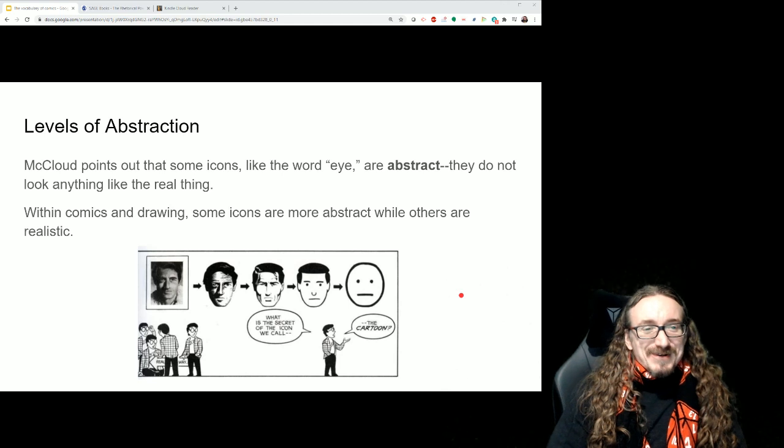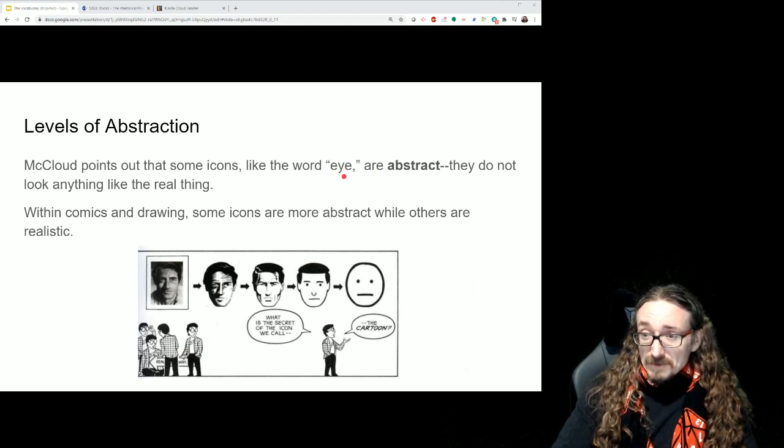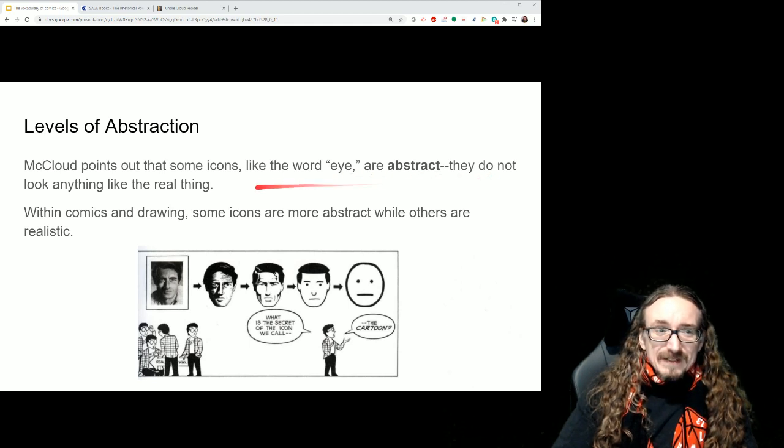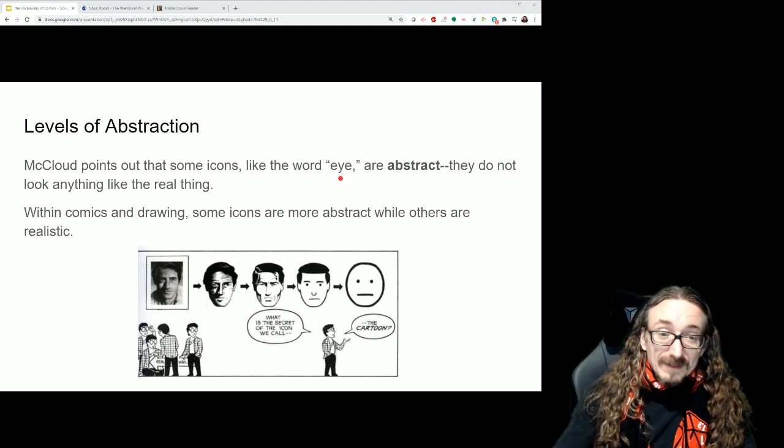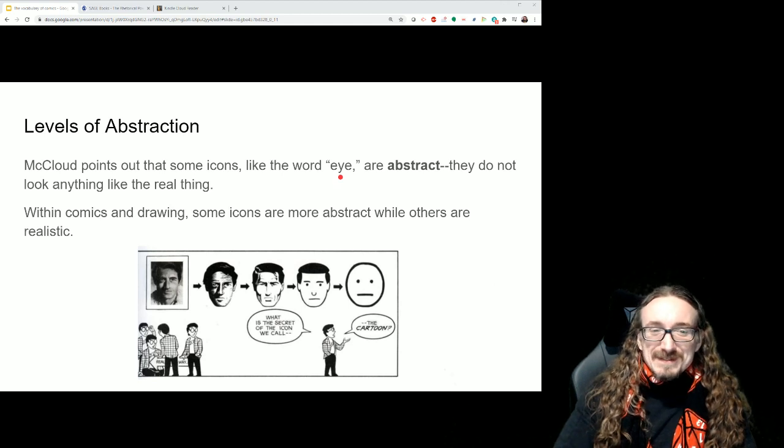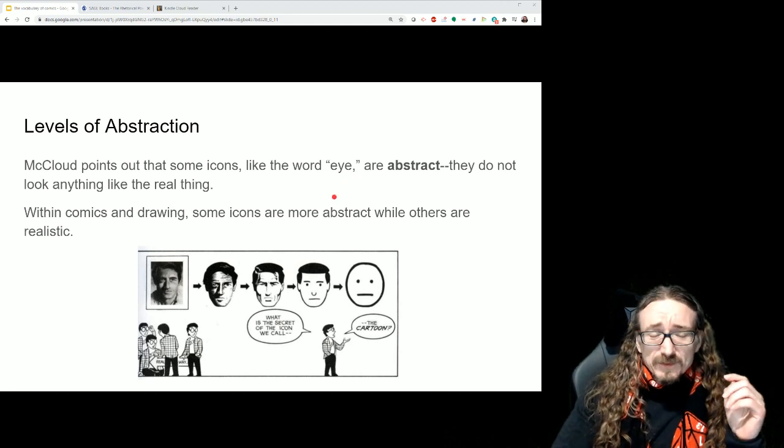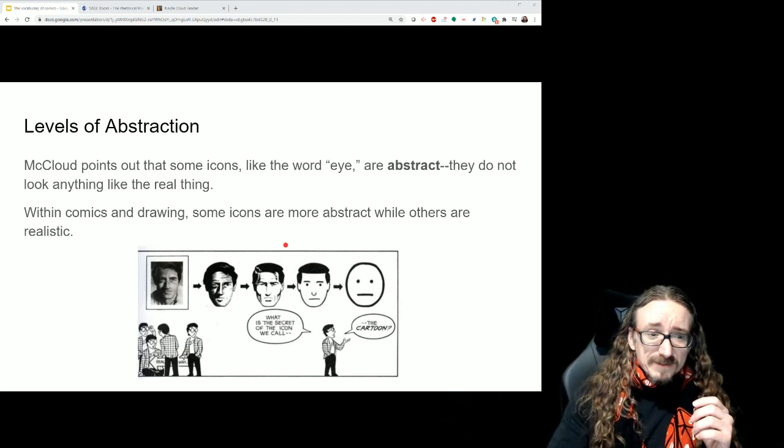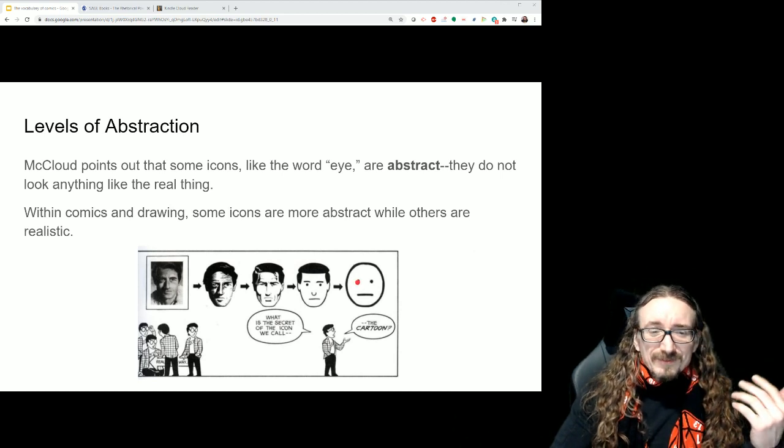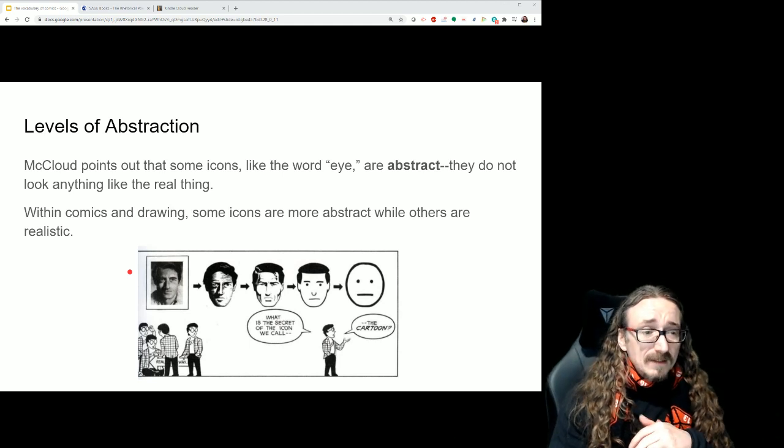Levels of abstraction. This is where it starts to get interesting for me. So he says that some icons, like the word eye, which I guess would be a practical symbol in his scheme, are very abstract. They don't look anything like the real thing. The word eye here, E-Y-E, doesn't really look anything like an actual eye, an eyeball. So he'd say that's pretty abstract. This is about as abstract as you can get as a word, as writing. Pretty abstract. Doesn't really have a whole lot to do with the actual thing.